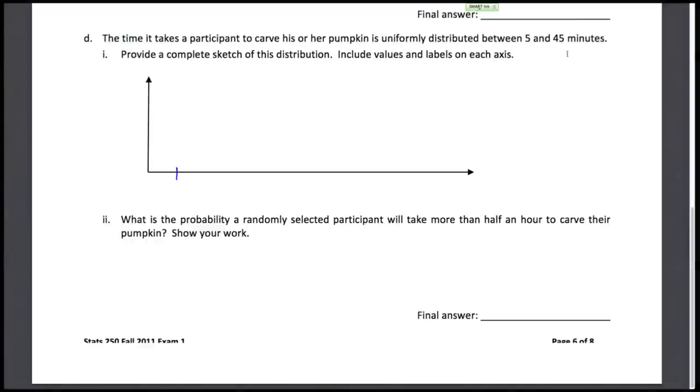So it goes from the lowest value 5 to 45. And remember the area of any distribution has to be 1. So in between these two values is 40. I draw really ugly 40s. That's what we have in between there, which means the height here has to be 1 40th.